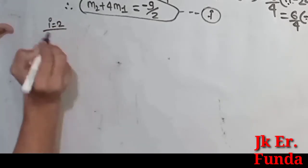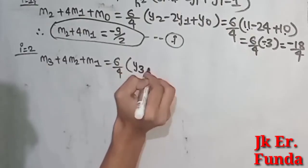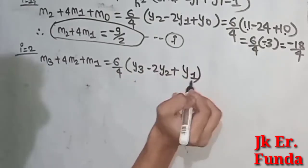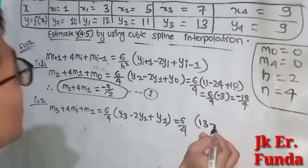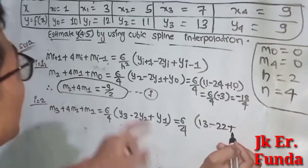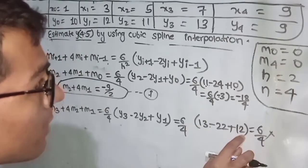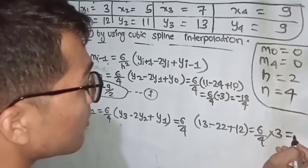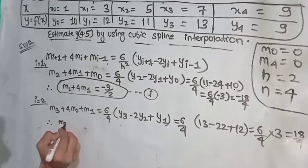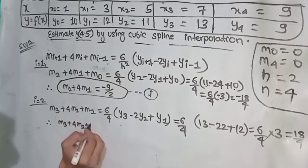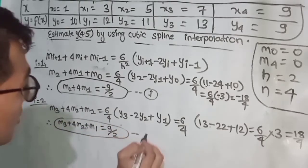Taking i equals 2: M_3 plus 4M_2 plus M_1 equals 6 divided by 4 times (y_3 minus 2y_2 plus y_1). Substituting: y_3 equals 13, 2 times y_2 equals 2 times 11 equals 22, plus y_1 equals 1. So 6 divided by 4 times (13 plus 25 minus 2 times 18) equals 6/4 times (18/4), giving 9/2. Therefore M_3 plus 4M_2 plus M_1 equals 9/2. This is equation number 2.